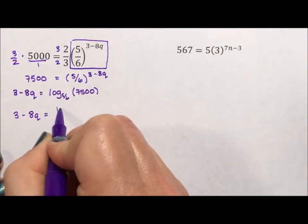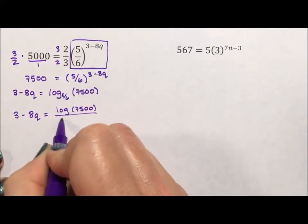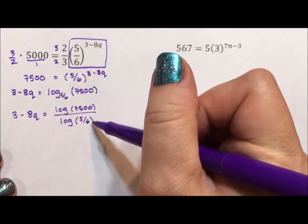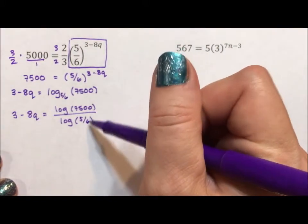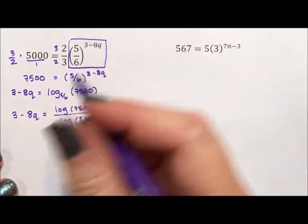So what we have to do is rewrite this as log of 7,500 divided by log of 5/6. So the change of base says the log of the argument over the log of the base allows you to change it to anything you want. I'll do the next problem a little bit differently and you'll see why this works out.